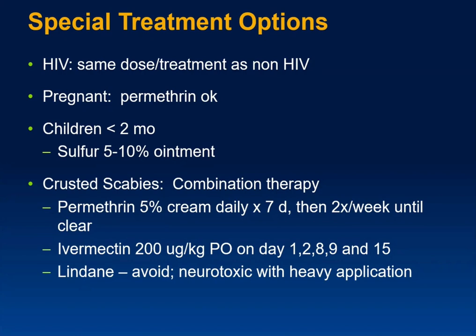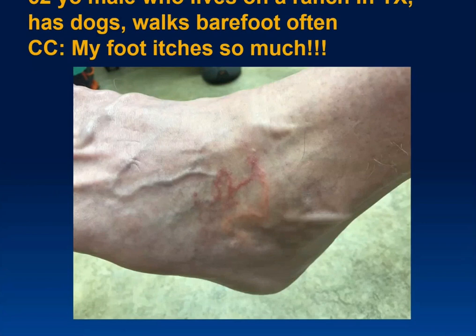For crusted scabies, you can use permethrin 5% cream daily for seven days, then twice a week until all crusts are gone. My preference is to use ivermectin at the standard dose on days 1, 2, 8, 9, and 15. We used to use lindane, but it can be toxic — I once saw a patient who was treated three times within a 24-hour period and became lindane toxic.